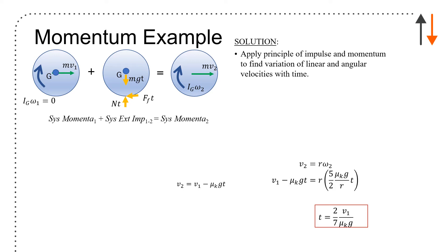Here's my picture. I have the initial system momentum, the external impulses, and the final one. I've combined here both the linear terms, mv1, and the angular terms, Ig omega 1. Here I have the terms that are going to affect it, which is force of friction, normal force, and weight, all acting over some time t. At the end of which, the ball is moving with a linear momentum mv2 and a final angular momentum of Ig omega 2.